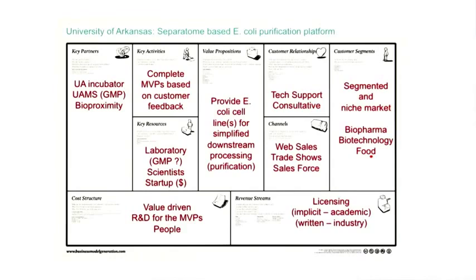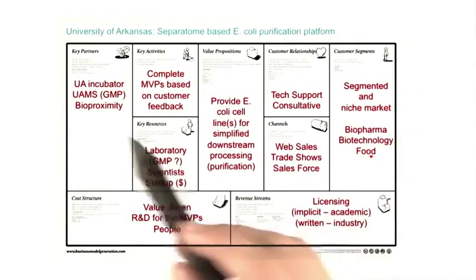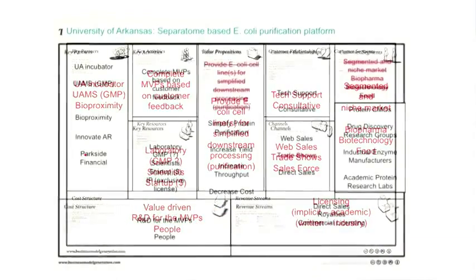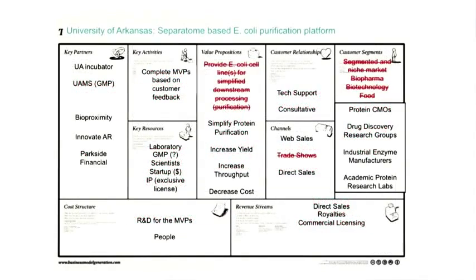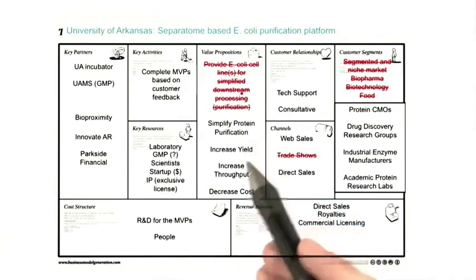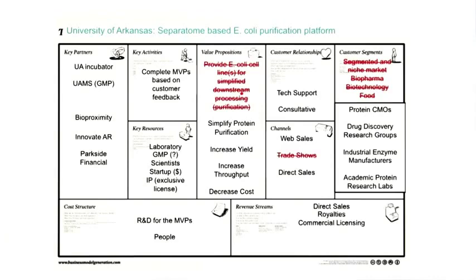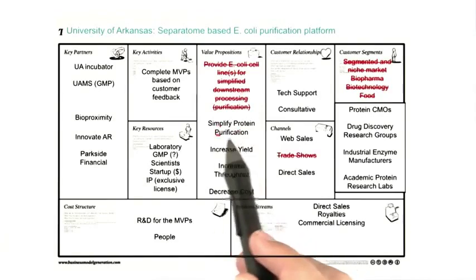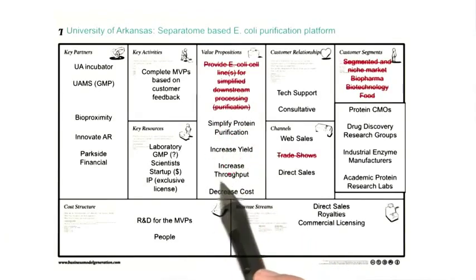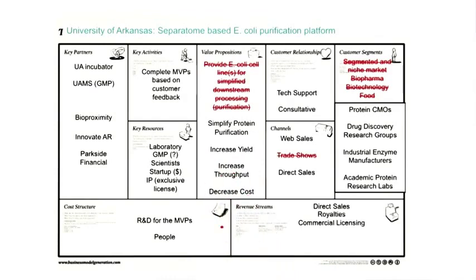They're still a little vague on their feature set, gains, pains, and value proposition, and they're getting a little more refined about partners. Then as they went further, they kind of understood: a value proposition is not what your technology is — it's what gain and pain you're providing. So: simplify protein purification, increase yield, increase throughput, decrease cost. Now that's making a lot more sense.